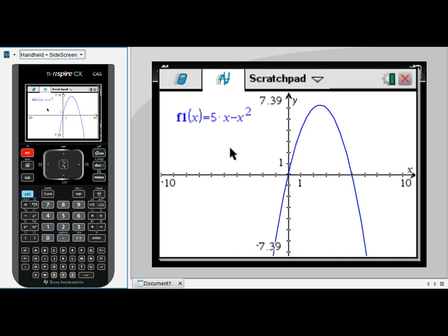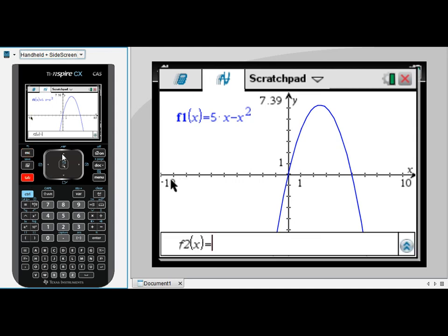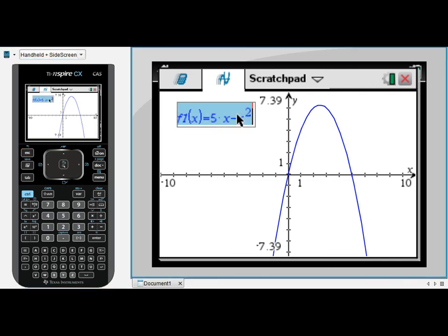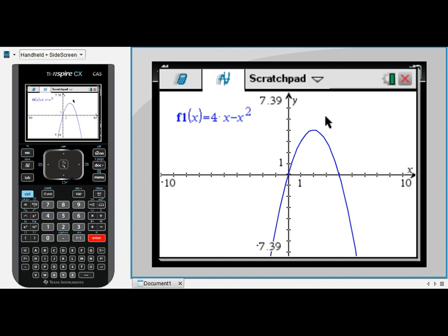One of the other advantages of the label is that you can actually edit your equation here. Rather than pressing tab and going back to the entry line and changing it down there, you can instead change the equation here. I can edit what's going on here and have a look at a different equation.